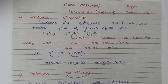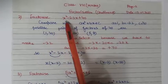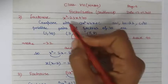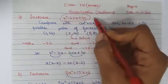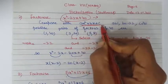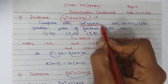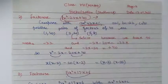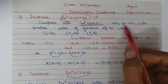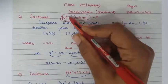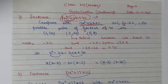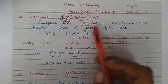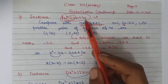The next question is: factorize x² minus 22x plus 40. Again, we compare the given polynomial with Ax² + Bx + C as we did in the first question. On comparing: a = 1, b = minus 22 — we take the negative sign because in the general polynomial there is only a positive sign — and c = 40.